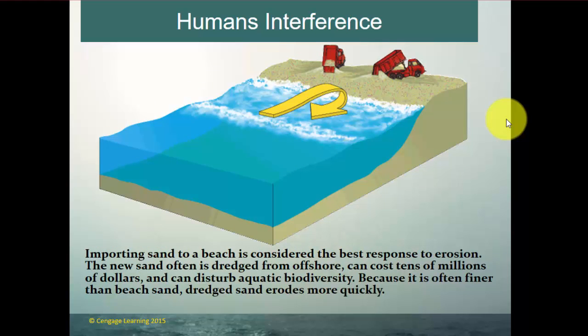Importing sand onto beaches is considered one of the better responses to erosion. However, new sand dredged from offshore is not the same quality as natural beach sand — it is less well-sorted, sometimes dirtier, often finer and more silty, making it more easily eroded. The process can cost tens of millions of dollars and can disturb aquatic biodiversity. The imported sand works temporarily but gets eroded almost more quickly than the original beach sand.